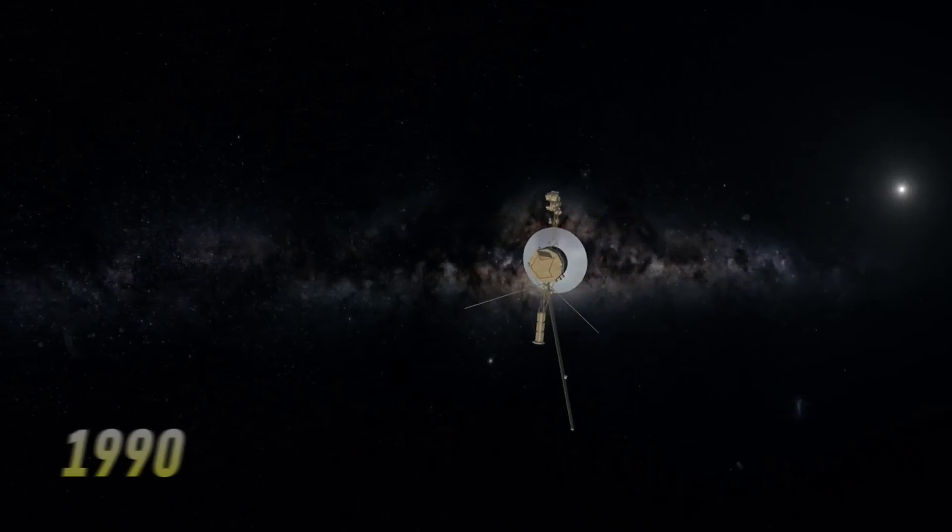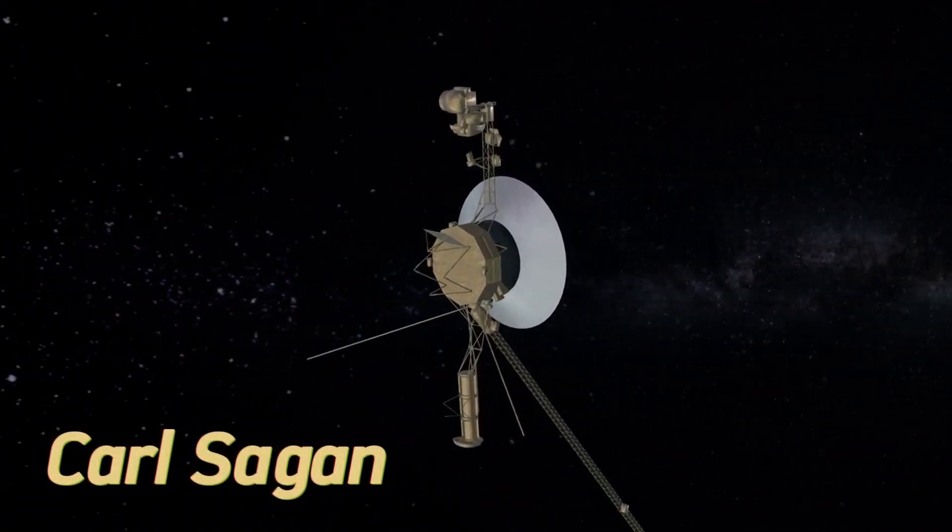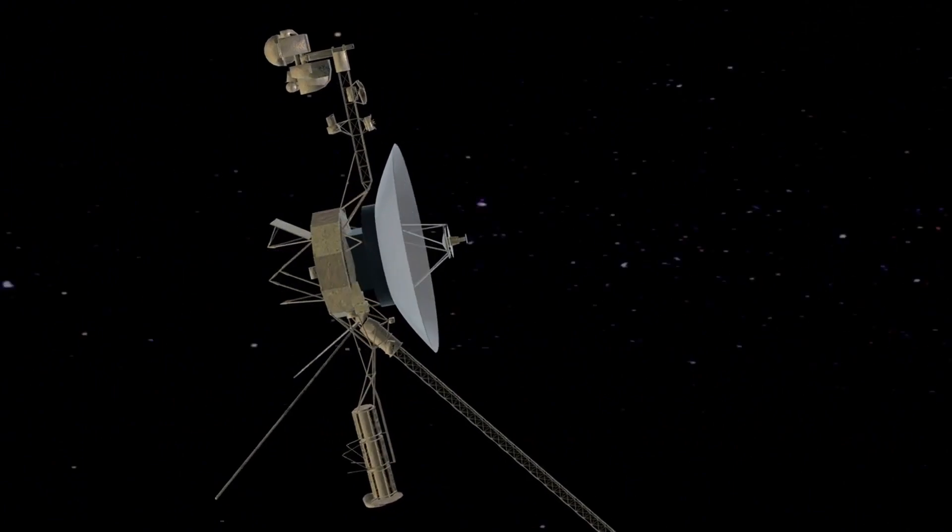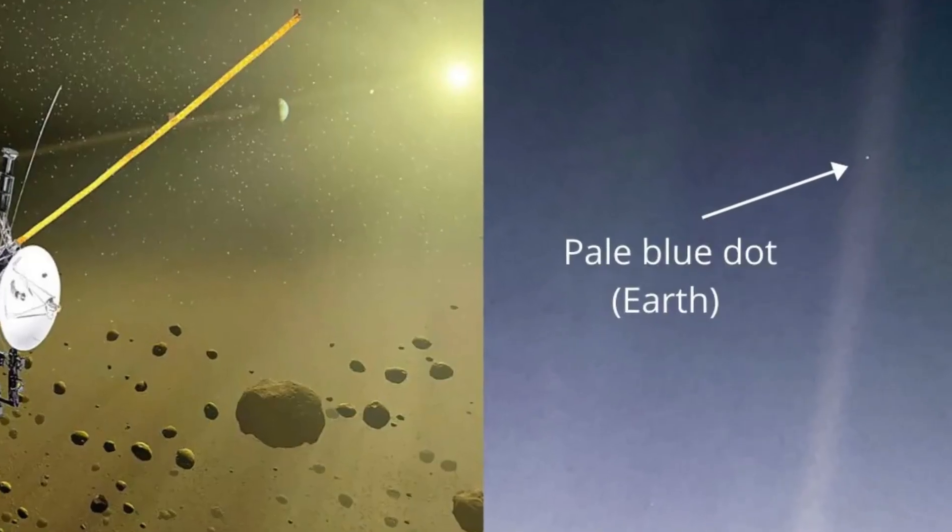Back in 1990, thanks to the famous astronomer Carl Sagan, Voyager 1 turned its camera back towards Earth and snapped one last photo. Talk about a cosmic selfie. Remember that famous picture, the pale blue dot?